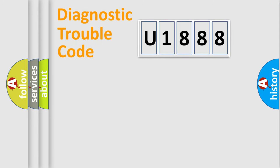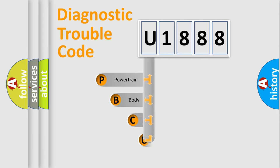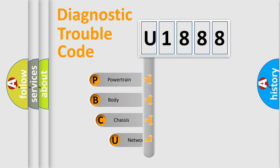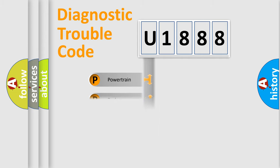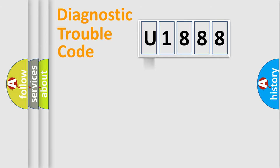Let's do this. First, let's look at the history of diagnostic fault code composition according to the OBD2 protocol, which is unified for all automakers since 2000. We divide the electric system of an automobile into four basic units: Powertrain, Body, Chassis, and Network.